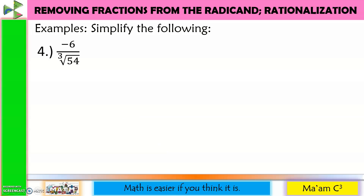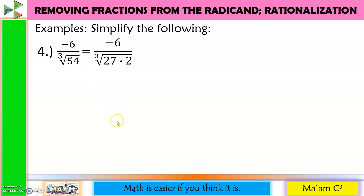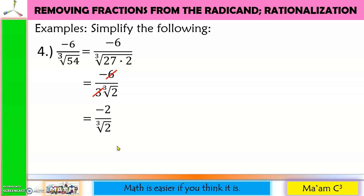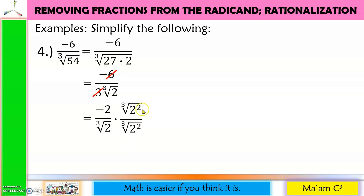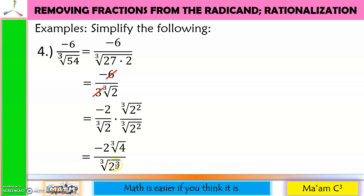Number 4: negative 6 divided by the cube root of 54. Since 54 = 27 × 2, and 27 has a cube root of 3, I can factor out 3. This gives negative 6 divided by 3 cube root of 2. Simplifying, 6 ÷ 3 = 2, so this is negative 2 over the cube root of 2. The index is 3 and the exponent of 2 is 1, so I need 2 more. I multiply numerator and denominator by the cube root of 2 squared, which is the cube root of 4. The denominator becomes the cube root of 2 cubed, allowing us to cancel. 2 ÷ 2 = 1. Final answer: negative cube root of 4.